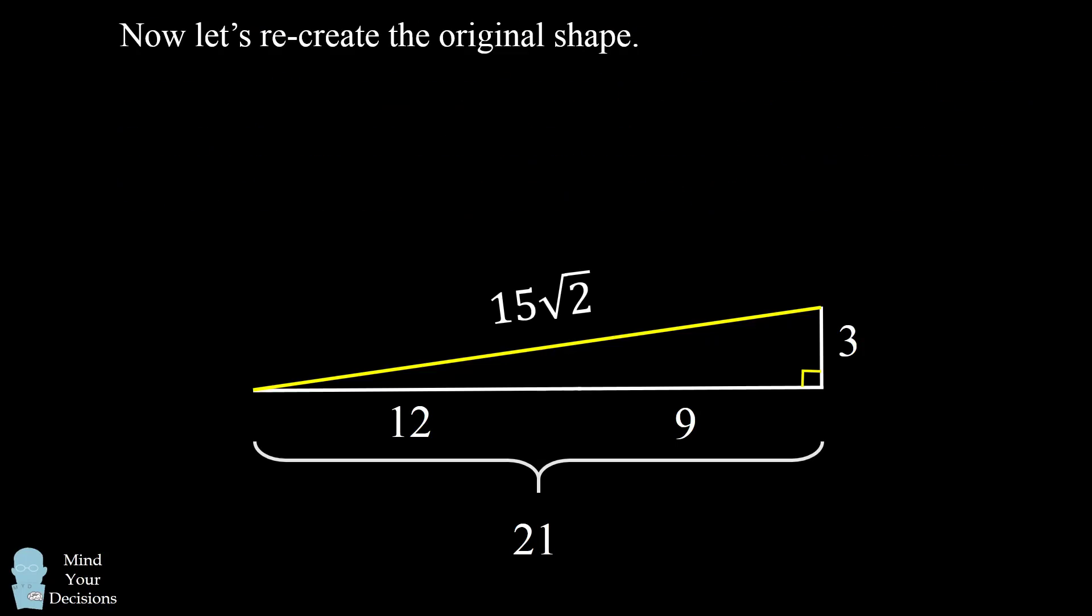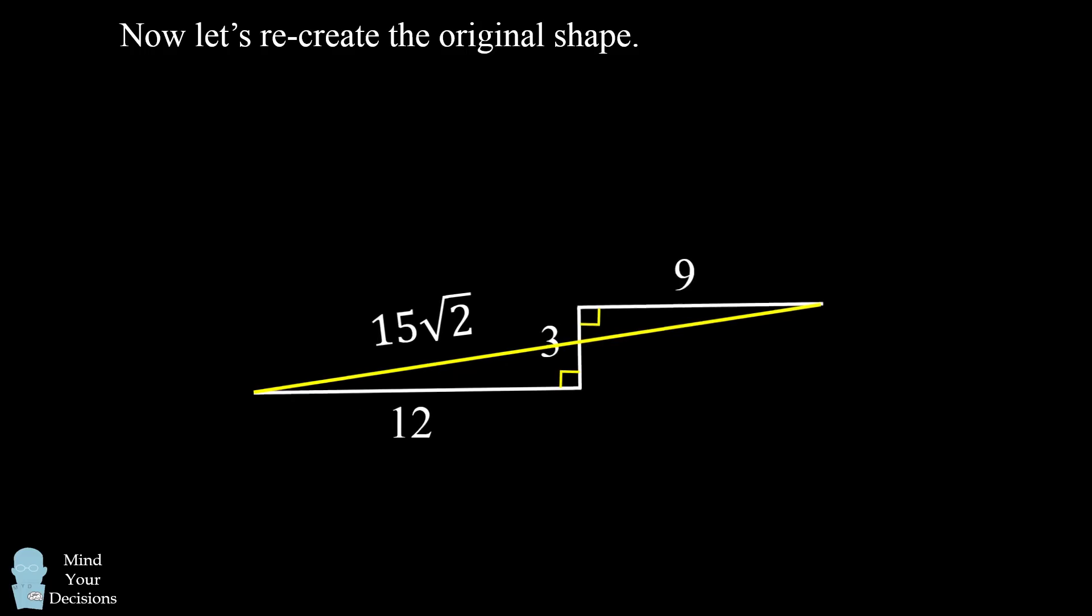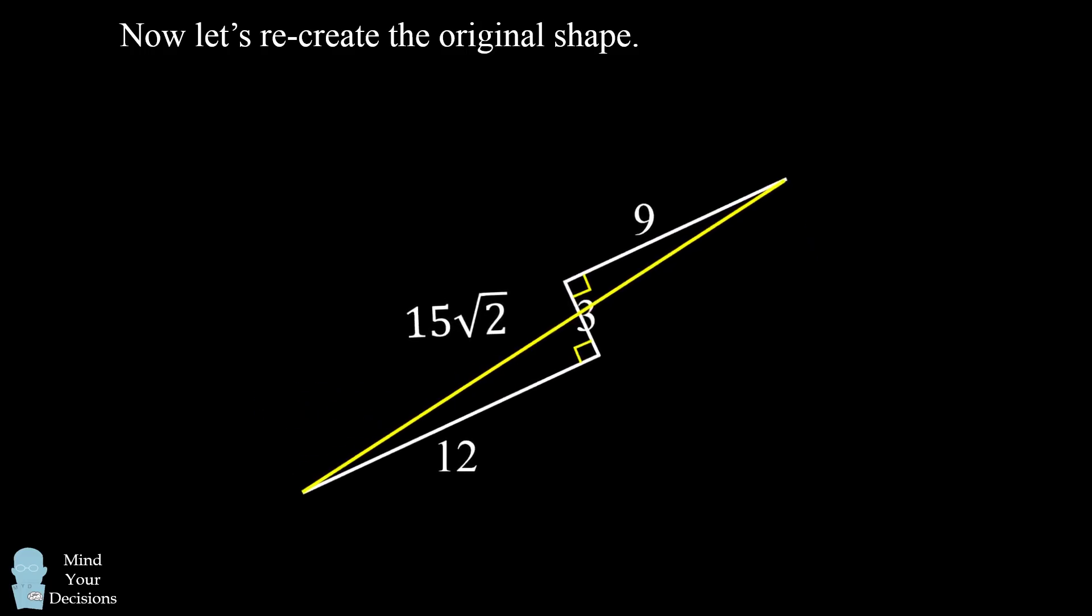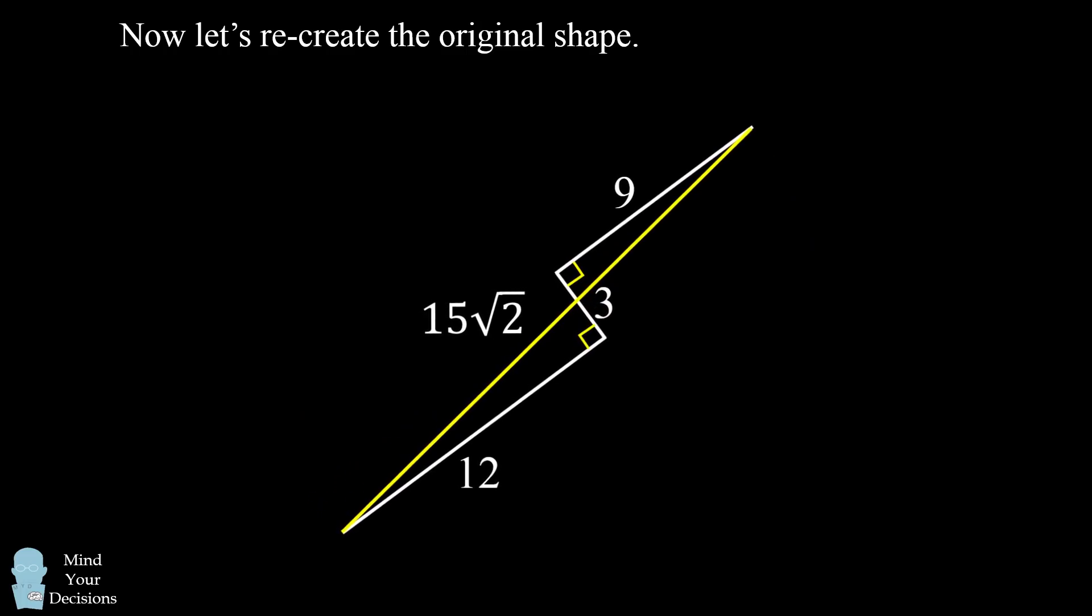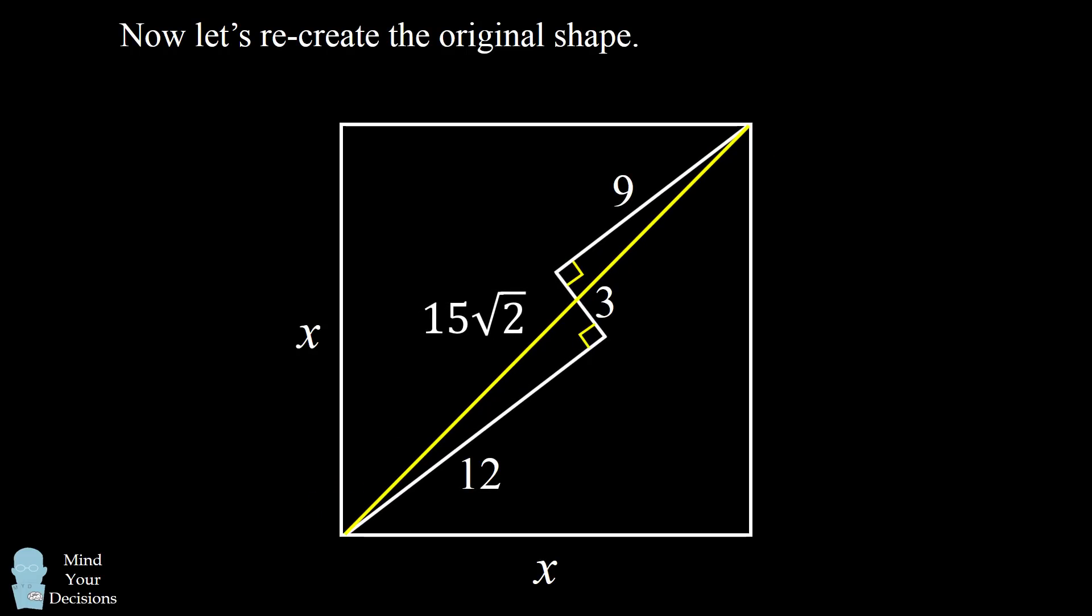So now let's take this information and get back to the original diagram. We'll recreate our line segments on interior of the square. And then we'll rotate them so that we have the distance from one corner of the square to the other corner of the square.